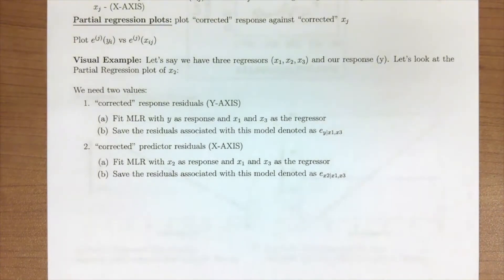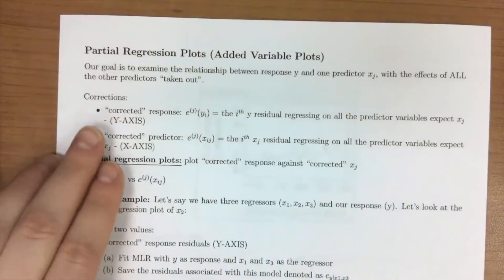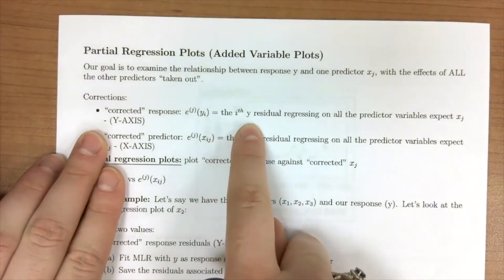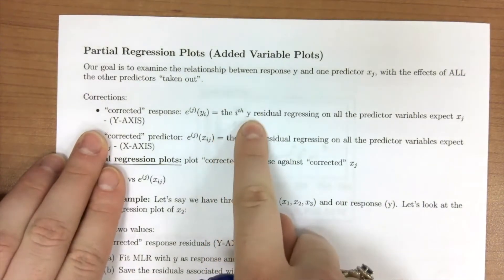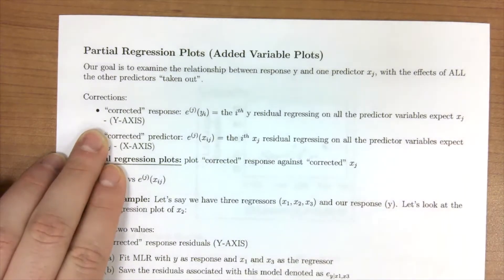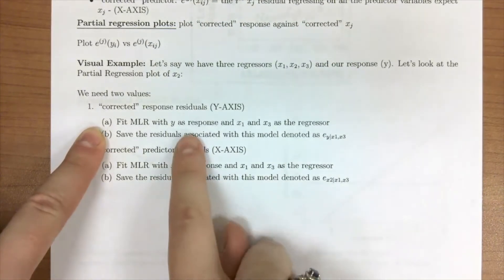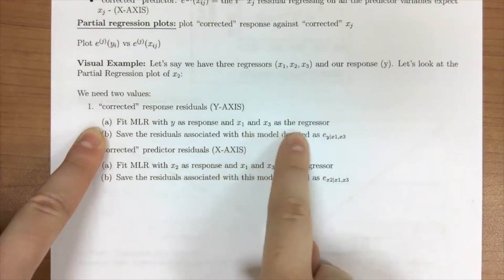Let's say we have three regressors — x1, x2, x3 — and our response, and we want to look at the partial regression plot for x2. What we need first are two values: the corrected response residuals for our y-axis and the corrected predictor residuals for our x-axis. The corrected response is the i-th y residual from regressing y on all the predictors except xj. That means we fit a multiple linear regression with y as our response and x1 and x3 as our regressors — we don't include x2 because that's what we're trying to understand.